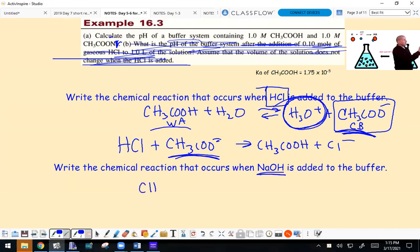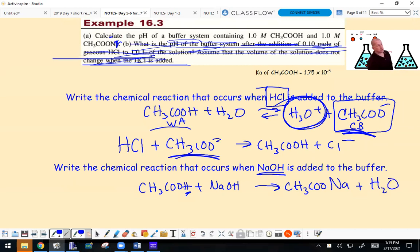What if we add a base? We react that with the acid. CH3COOH plus NaOH gives CH3COO- and H2O. Sodium is a spectator ion, so if they ask for the net ionic reaction, you'd get rid of the spectator.